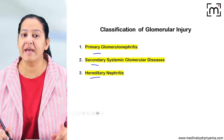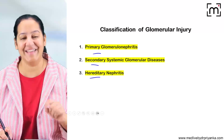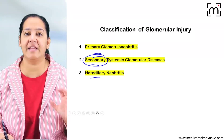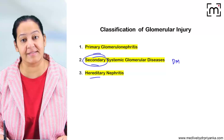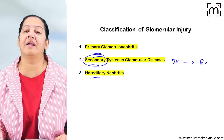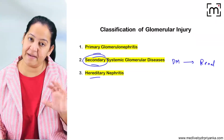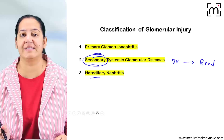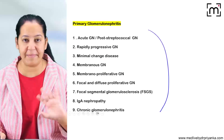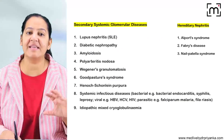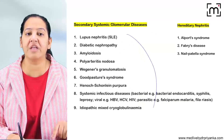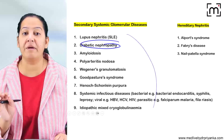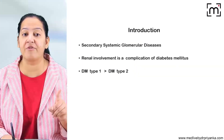Diabetic nephropathy is a type of secondary glomerular disease in which the main disease is diabetes mellitus, and secondarily there is renal involvement leading to diabetic nephropathy. Among the primary glomerulonephritides there are nine types; diabetes does not fall in that category but among the secondary causes, diabetic nephropathy is one of them.